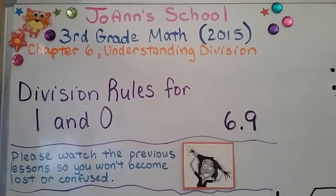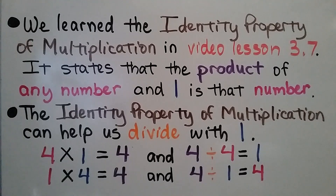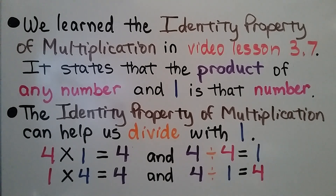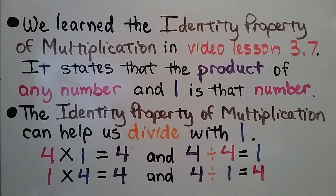Lesson 6.9: Division Rules for 1 and 0. We learned the identity property of multiplication in video lesson 3.7. It states that the product of any number and 1 is that number. The identity property of multiplication can help us divide with 1.